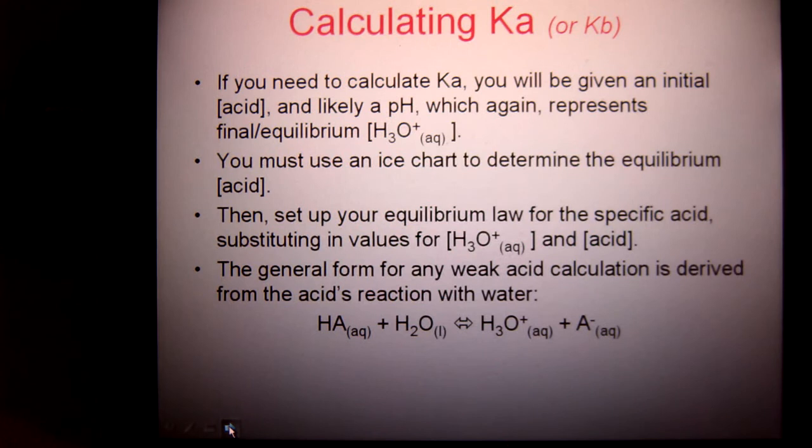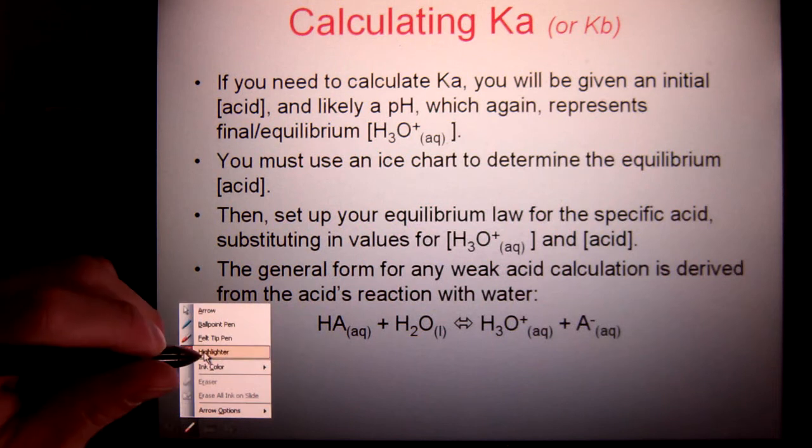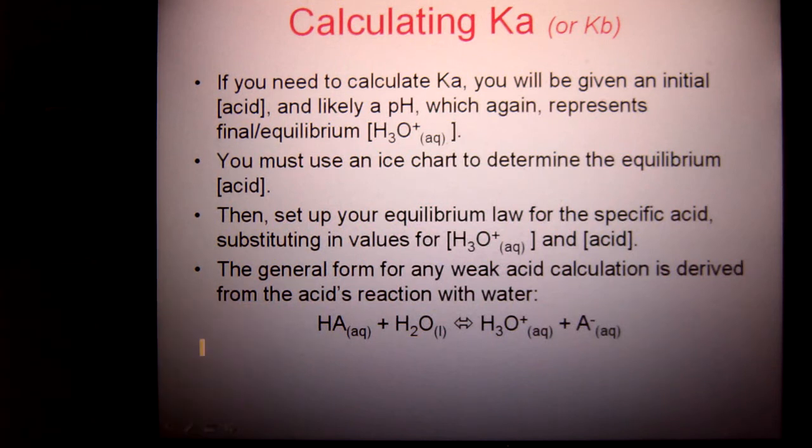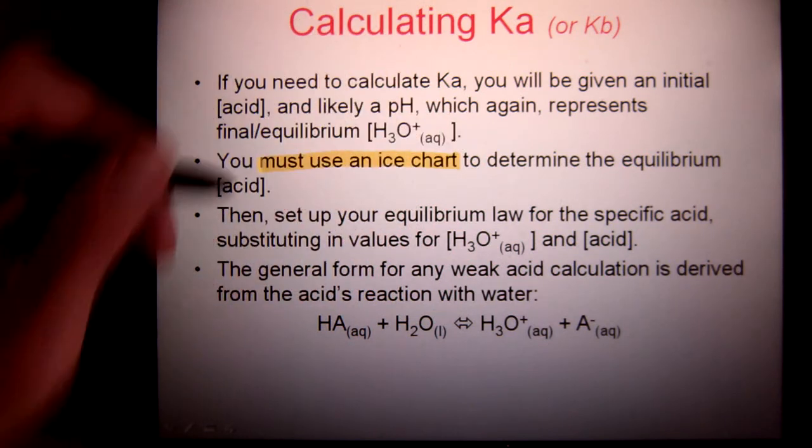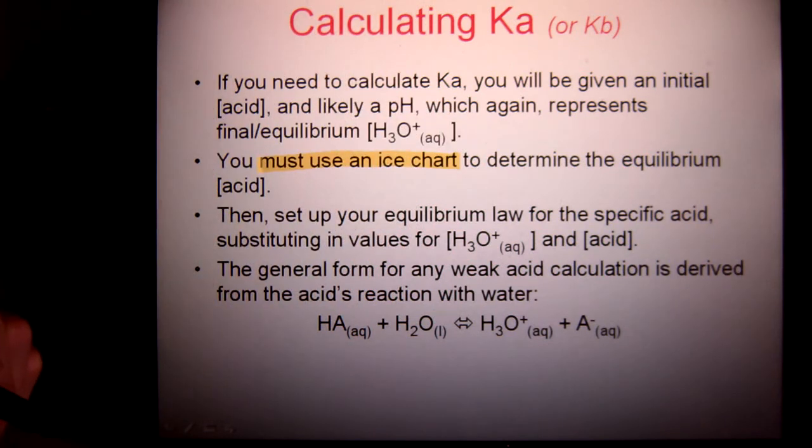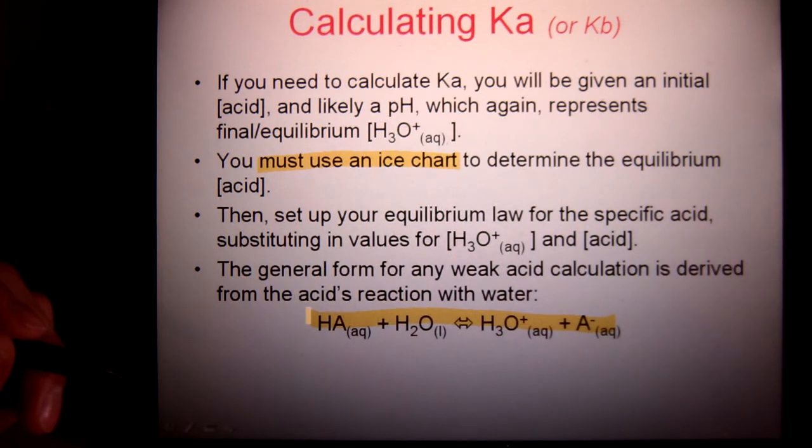It could be an unknown acid in which case we have no idea if the approximation rule works or not. So when we are trying to calculate a Ka or Kb you must use an ICE chart. We don't know if the approximation rule will fit and since it doesn't really matter what the acid or base type is because they always follow the same pattern, just use one reaction. HA plus water gives our hydronium and A-.